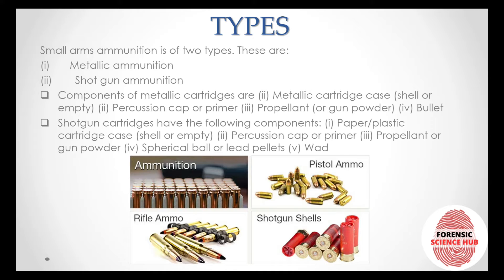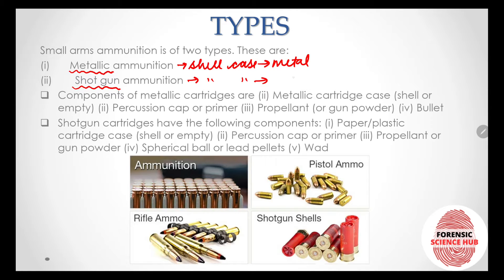Small arm ammunition is basically of two types: it can either be metallic ammunition or shotgun ammunition. These have been classified on the basis of what kind of material is used to make the shell case. In metallic ammunition, the shell case is made up of metal. In shotgun ammunition, the shell case is made up of either paper or plastic.